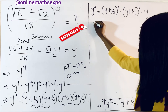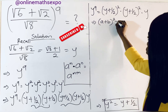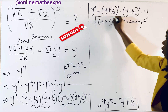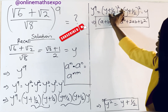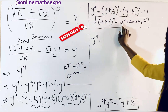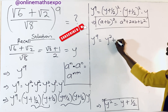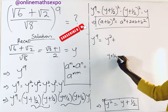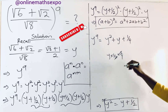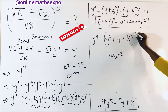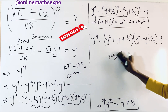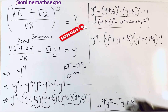Expanding (y + 1/2)² using the binomial formula: a = y, b = 1/2. We get y² plus 2 times y times one half plus (1/2)², which gives y² plus y plus one quarter. So each (y + 1/2)² equals y² + y + 1/4.